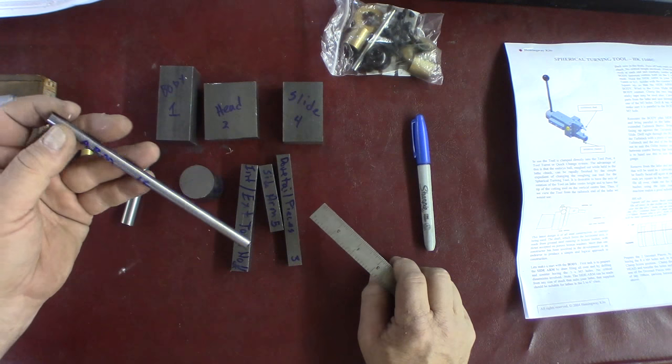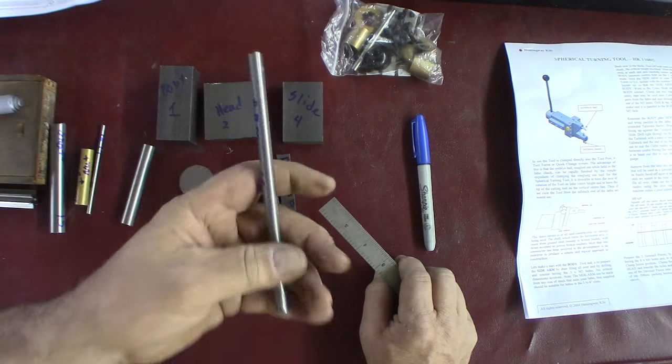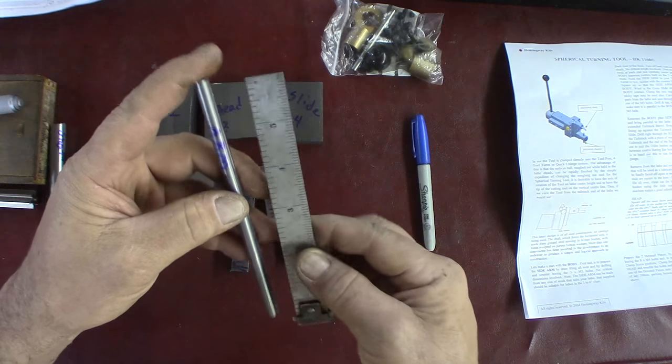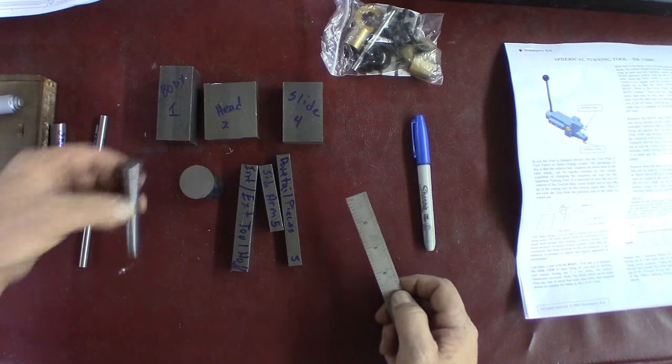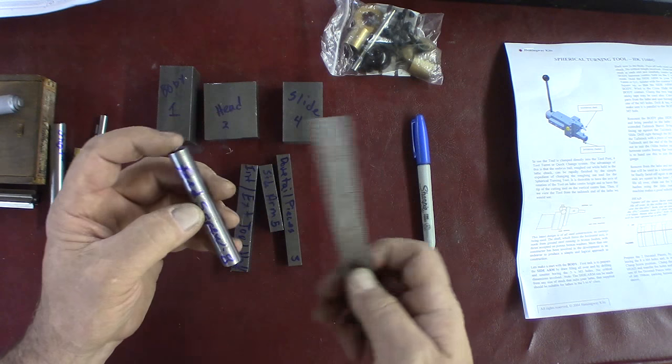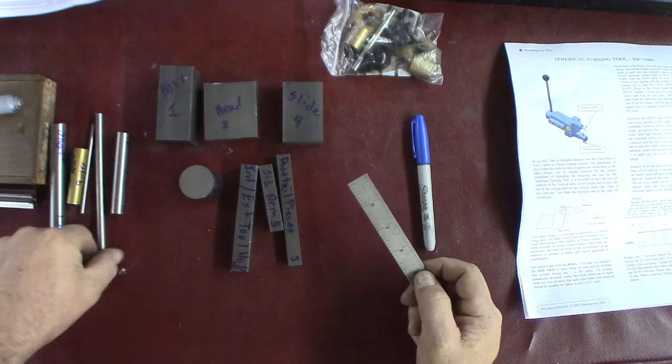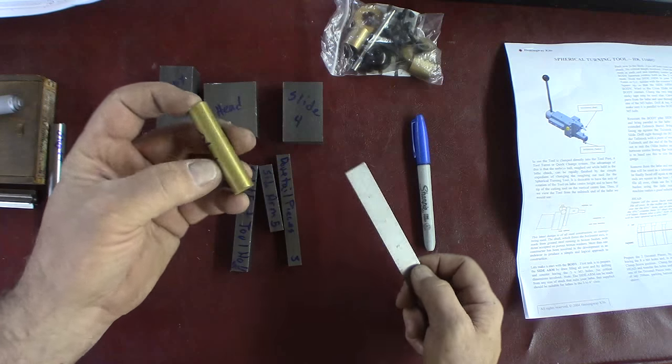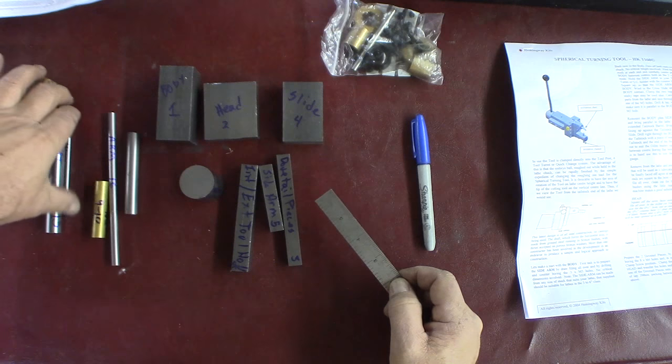This is what they call free machining steel. So it could be 12L14 or a few others. It's about six inches of five-eighths rod. Feed screw, another free machining steel. Three and a quarter inches by half. And a chunk of brass. Half by two and a quarter. That's for the locking screw and nut.